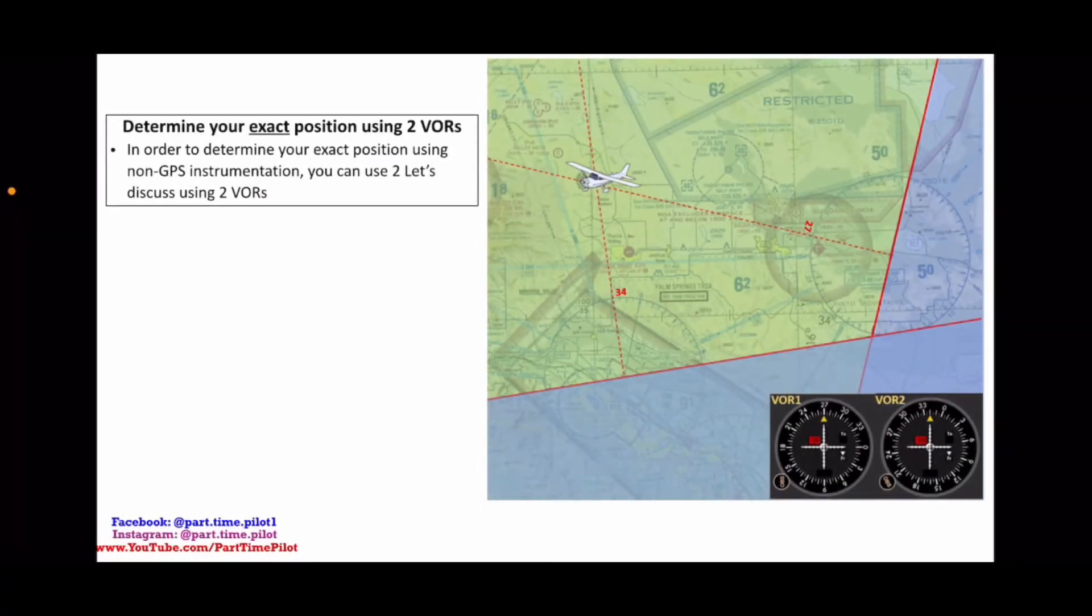Hey guys, how's it going? We're continuing to talk about VORs and this one is how to determine your exact position using two VORs. In my last video, I talked about how to determine your relative position with one VOR. And so if you haven't watched that, go ahead and watch that because you're going to need to use those skills twice to determine and triangulate an exact position in space if you're lost, for example, with two VORs.